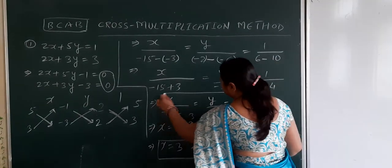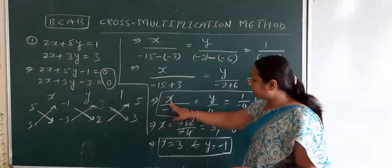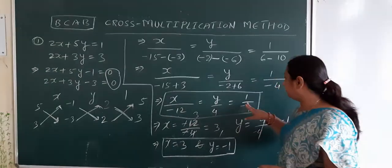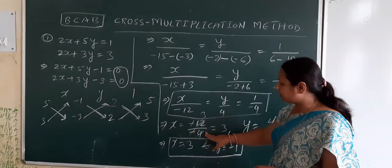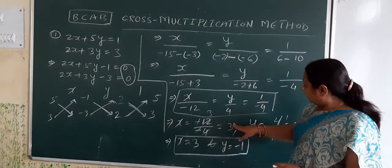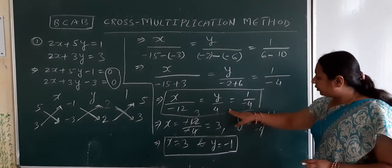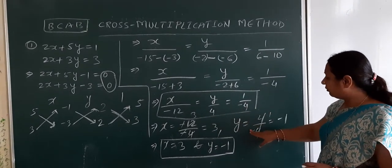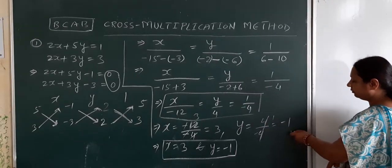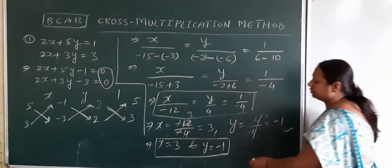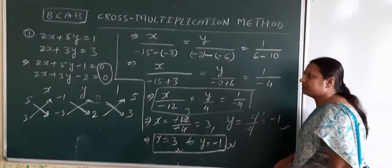These three terms are equal to each other. So we can write x by minus 12 equals 1 by minus 4, and we get x equals minus 12 divided by minus 4, which gives x equals 3. And y by 4 equals 1 by minus 4, so y equals minus 1.